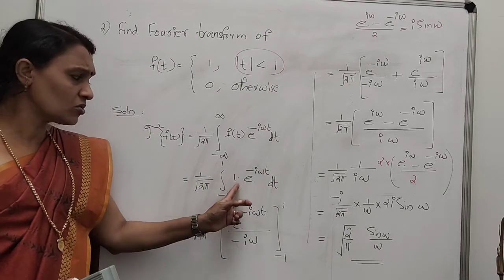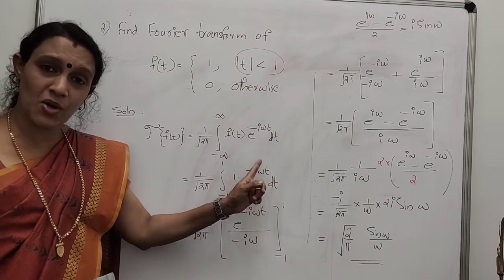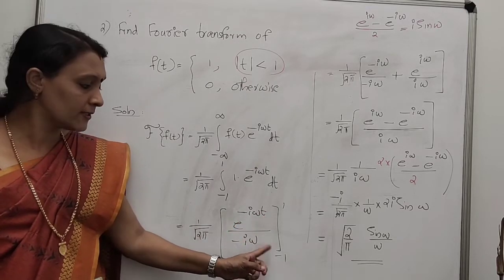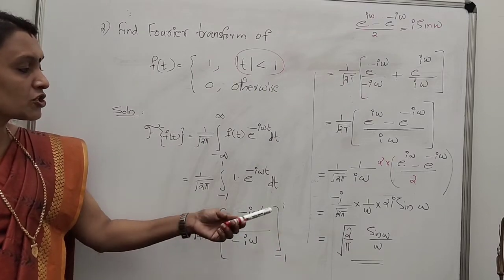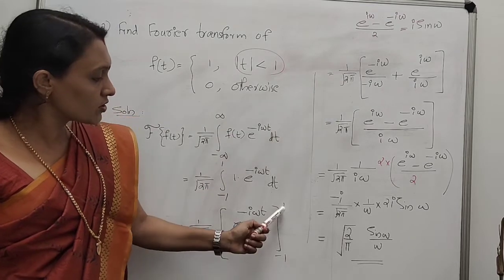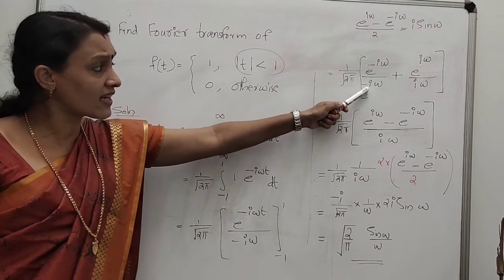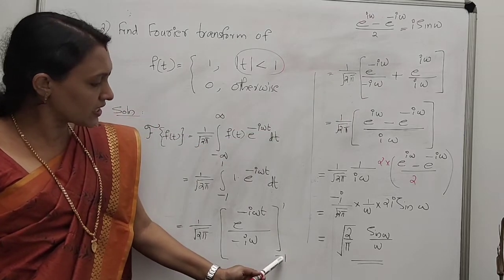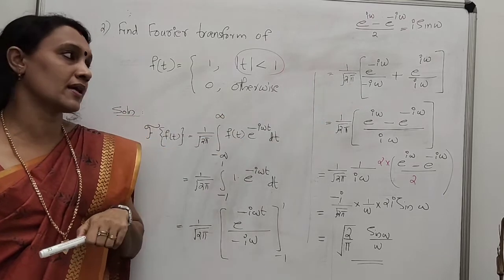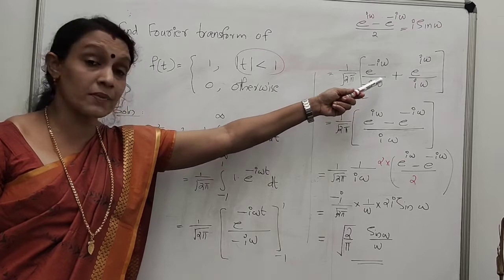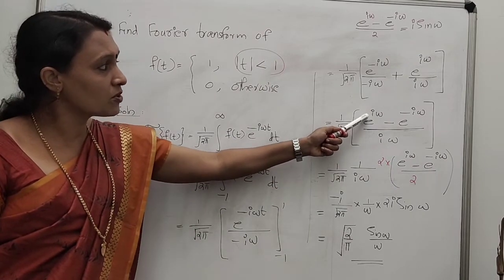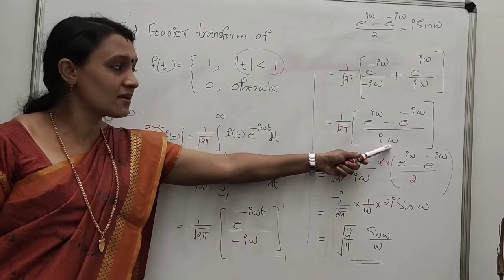Integrating: (1/√(2π)) × [e^(-iωt)/(-iω)] with limits -1 to 1. Substituting upper limit t=1: e^(-iω)/(-iω). Substituting lower limit t=-1: e^(iω)/(iω). Combining with common denominator iω, we get (1/√(2π)) × (e^(iω) - e^(-iω))/(iω).